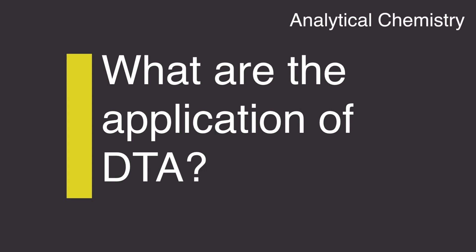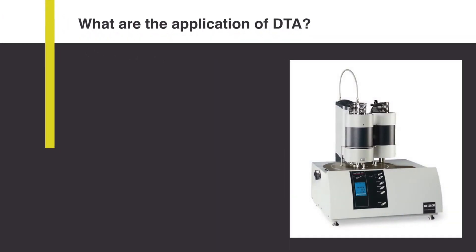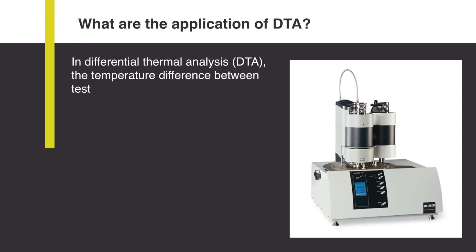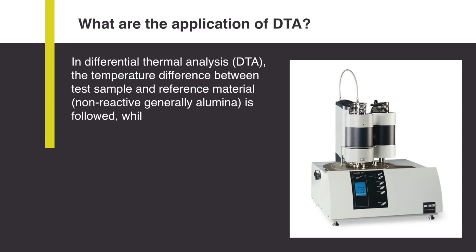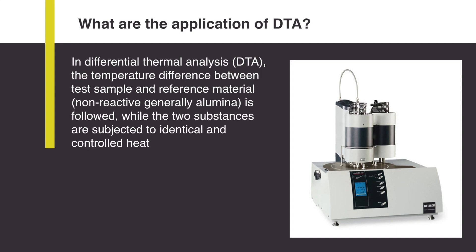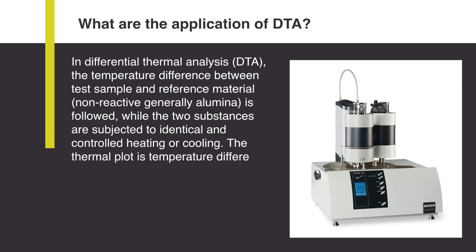What are the applications of Differential Thermal Analysis or DTA? In Differential Thermal Analysis, the temperature difference between a test sample and a reference material, which is non-reactive, is followed while the two substances are subjected to identical and controlled heating or cooling. The thermal plot is temperature difference versus the temperature of the reference material.